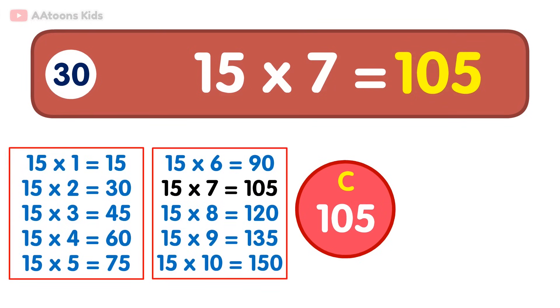15 times 7 is equal to 105. 15 times 7 is 105.